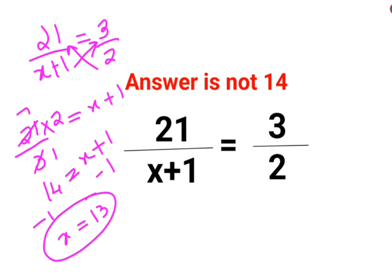Now for those of you who could not understand what I did in the first step, I'm going to do the easier version. So when you have 21 upon x plus 1 equals to 3 upon 2, you just do cross multiplication first.